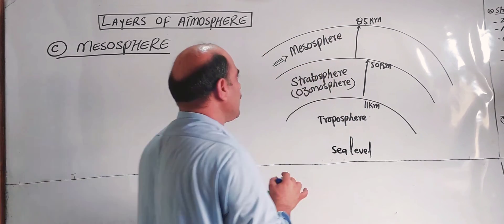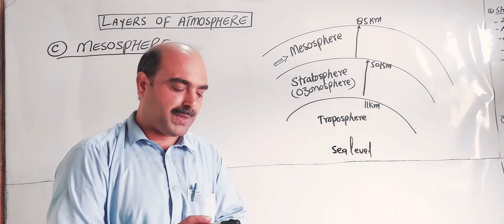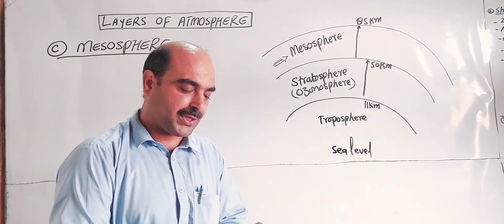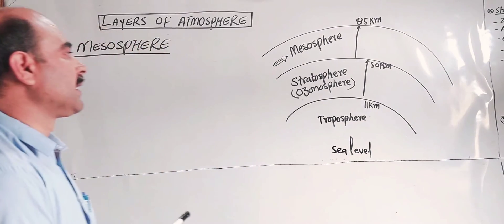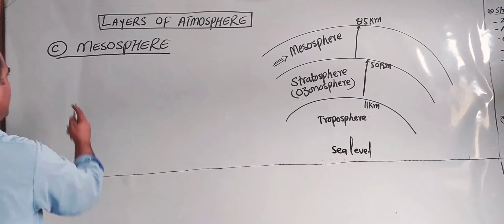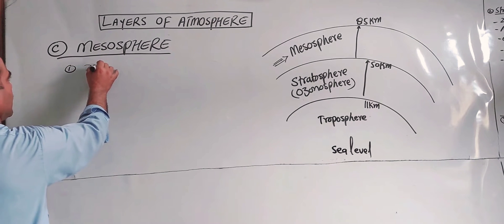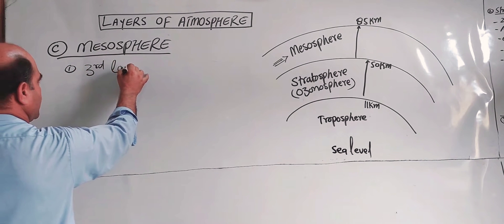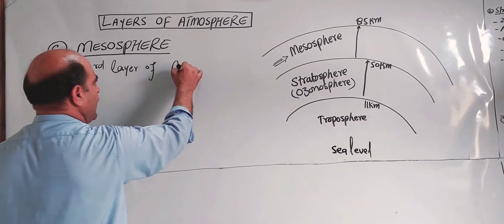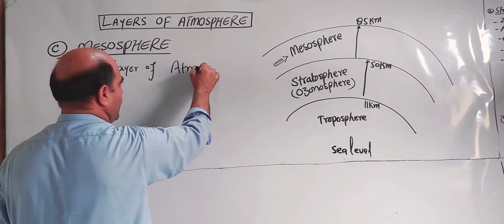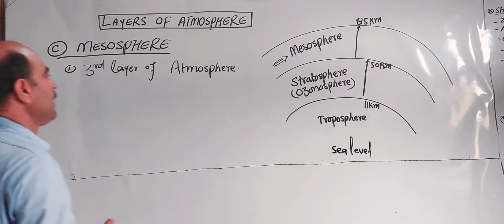Now let's discuss the characteristics of the mesosphere clearly. The first characteristic: the mesosphere is the third layer of the atmosphere — it is the third layer of the atmosphere.